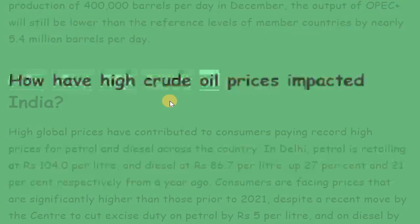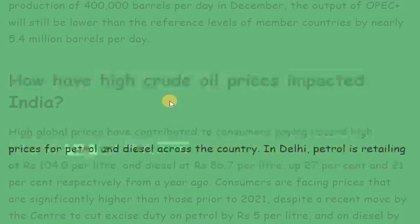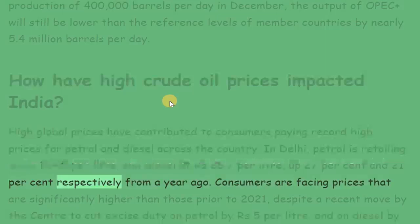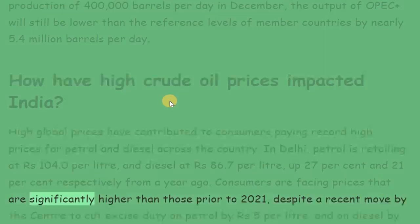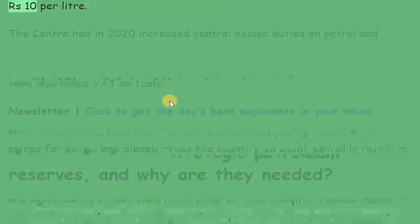How have high crude oil prices impacted India? High global prices have contributed to consumers paying record-high prices for petrol and diesel across the country. In Delhi, petrol is retailing at 104 rupees per litre and diesel at 86.7 rupees per litre, up 27 percent and 21 percent respectively from a year ago. Consumers are facing prices significantly higher than those prior to 2021, despite a recent move by the centre to cut excise duty on petrol by Rs. 5 per litre and on diesel by Rs. 10 per litre.